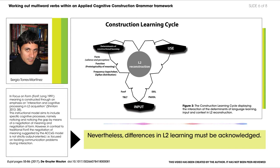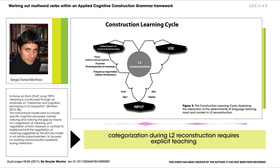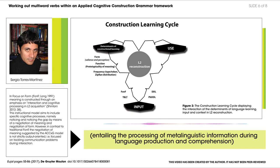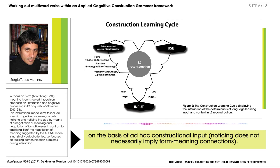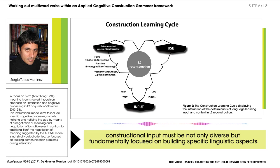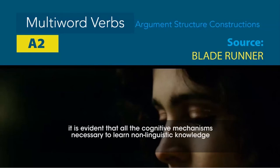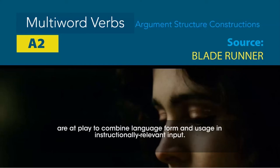Nevertheless, differences in L2 learning must be acknowledged. While in L1 constructional learning, noticing and conscious mapping is essential for the process of generalization, categorization during L2 reconstruction requires explicit teaching, entailing the processing of meta-linguistic information during language production and comprehension on the basis of ad-hoc constructional input. Noticing does not necessarily imply form-meaning connections. Since L2 learning faces direct shortages of resources, constructional input must be not only diverse but fundamentally focused on building specific linguistic aspects. Since constructional learning is non-modular and non-specific to language, all the cognitive mechanisms necessary to learn non-linguistic knowledge are at play to combine language form and usage in instructionally relevant input.